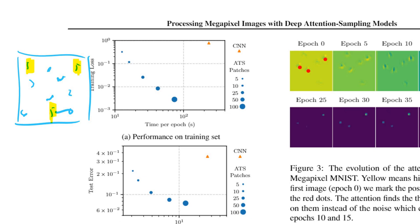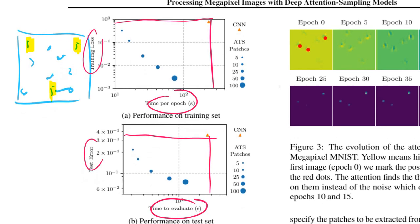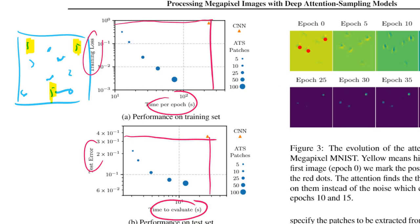If you give this to a regular CNN, you see it does about this well. This is the training loss here, and this is the test loss, and it takes this much time, time per epoch here, and this much time to evaluate.